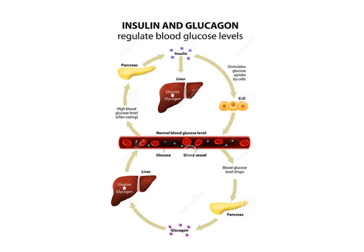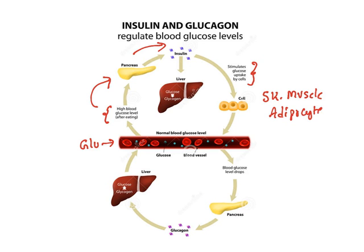Now let us understand the roles of insulin. Whenever we take food there is a lot of glucose in the blood. The high blood glucose level gives a signal to pancreas. Whenever the pancreas senses higher amounts of glucose, it releases insulin. One of the major functions of insulin is to stimulate glucose uptake into the cell, especially into skeletal muscle and adipocytes — that means fat cells. Not only that, in the liver, insulin makes sure that glucose is converted to glycogen. Glucose is a monomer; glycogen is a polymer. The small glucose molecules combine to form the bigger glycogen. Insulin is converting glucose to the polymer glycogen.